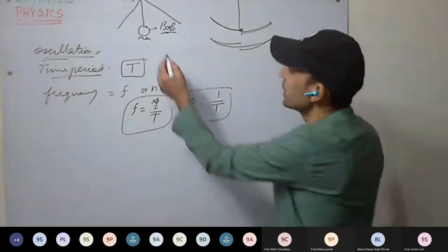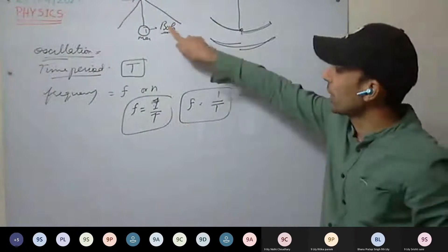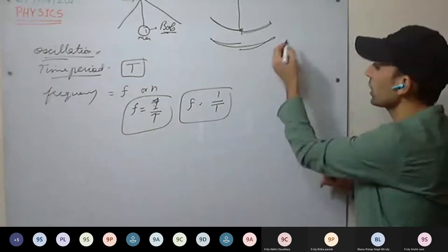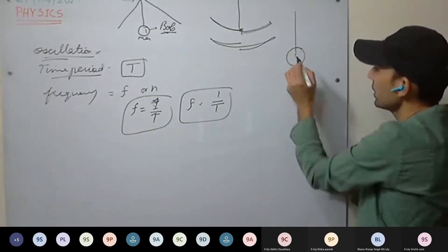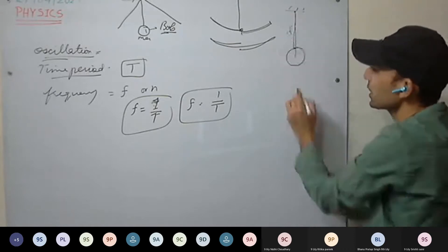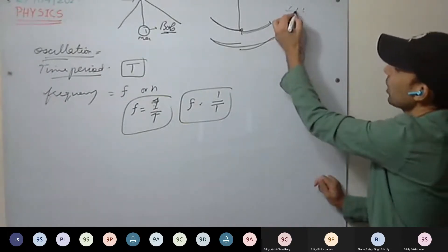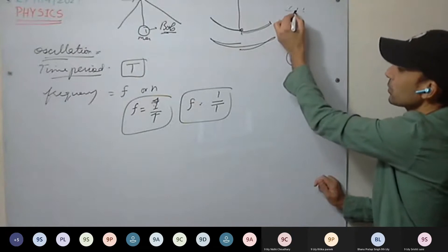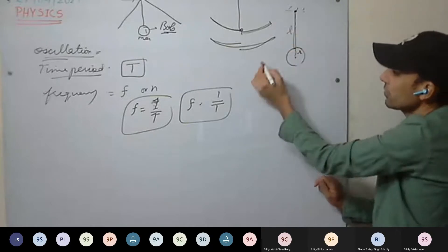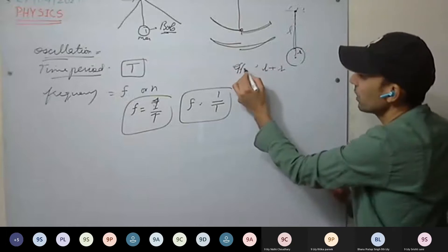Then we discussed amplitude — the maximum displacement of the bob on either side from the mean position. Then the effective length: for all measurements you have to take the effective length. The effective length is the distance from the point of suspension to the center of mass of the bob — that is, the length of the string plus the radius of the bob.